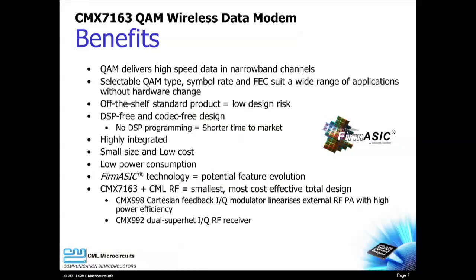The spectrally efficient QAM modulations of the CMX7163 provide high speed data transfer in narrow band RF channels. Up to 96 kilobits per second in a 25 kilohertz channel is possible with the CMX7163. The CMX7163's wide variety of modulation types, data rates, and FEC choices allow your product to support many applications without a hardware change.